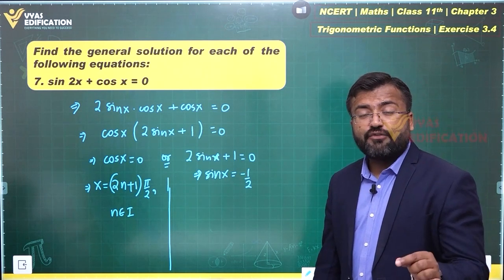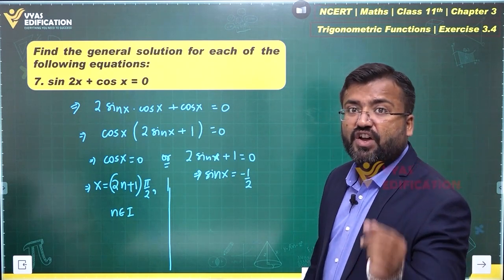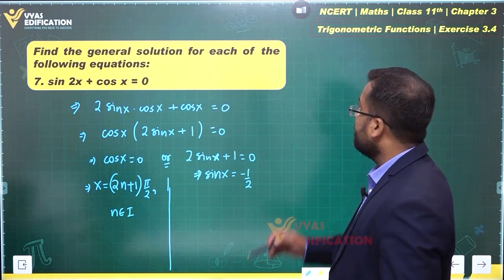Sin x equals minus 1 by 2. So you'll have to find one value, one value of x for which sin x equals minus 1 by 2.